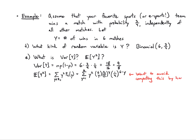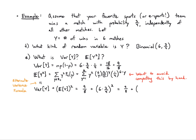The alternate variance formula is: Var(Y) = E[Y²] - (E[Y])². Rearranging, E[Y²] = Var(Y) + (E[Y])². We already know the variance is 9/8, and the mean is np = 6 * (3/4) = 9/2. So E[Y²] = 9/8 + (9/2)² = 9/8 + 81/4 = 9/8 + 162/8 = 171/8.